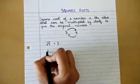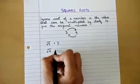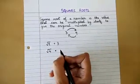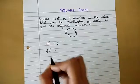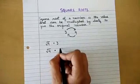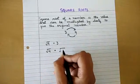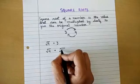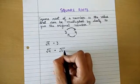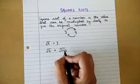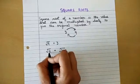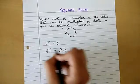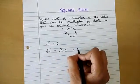Suppose we have to find out the square root of 4. We will ask ourselves: what can we multiply by itself to get this number? Suppose 2 — if we multiply 2 by 2, that is, the number multiplied by itself, we are getting 4. So the square root of 4 will be 2.